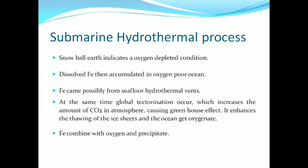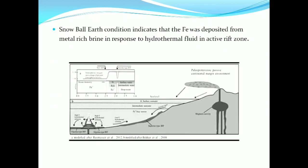At the same time, global tectonization occurred, which increased the amount of carbon dioxide in the atmosphere causing the greenhouse effect. This enhanced the melting of the ice sheet and the ocean became oxygenated again. As a result, ferrous ions combined with oxygen and produced iron oxide, which precipitated forming the iron-rich layer. The snowball Earth condition indicates that iron was deposited from the mantle-rich brine in response to hydrothermal fluid in the active rift zone. Hydrothermal fluid from hydrothermal vents carried enormous amounts of iron, which reacted with oxygen in the ocean to produce the iron-rich layer.